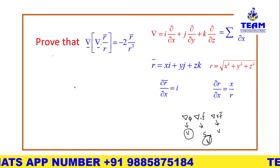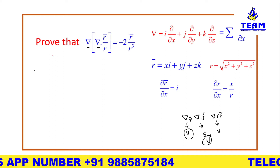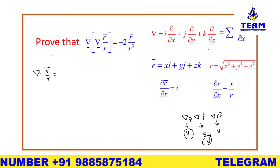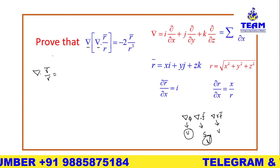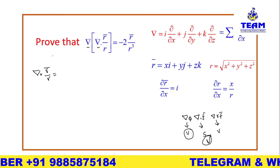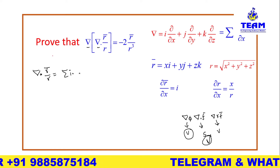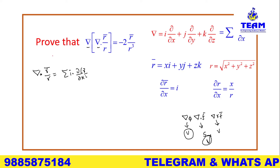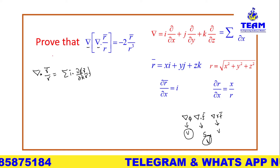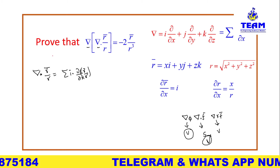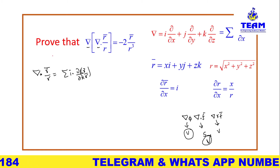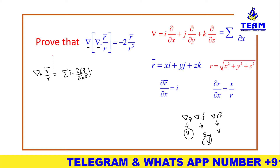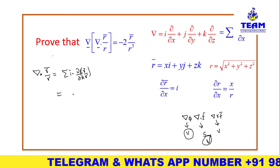Now coming to the solution. First I am working inside the bracket: ∇·(r̄/r). I can write del as summation i·∂/∂x, and since there is a dot product, I write summation i · ∂/∂x(r̄/r). Inside the bracket we have a quotient, so I apply the u/v rule: denominator times numerator derivative minus numerator times denominator derivative, all divided by denominator squared.